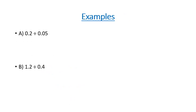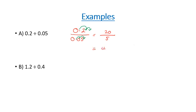Let's look at some examples using similar numbers. In our first division question, we put our numbers in a fraction. If we move the decimal place one spot at the top we get a whole number of 2, but if we move one spot at the bottom we still have a decimal, so we need to move it twice. Because we're moving it twice in the denominator, we must also move it twice in the numerator — we're multiplying by 100. This gives us 20 over 5, and 20 divided by 5 gives us an answer of 4.